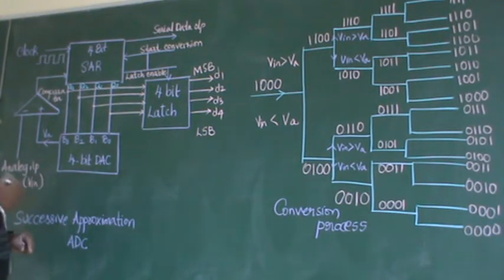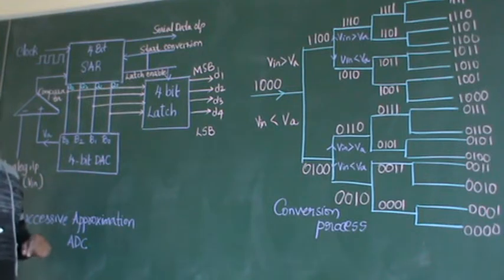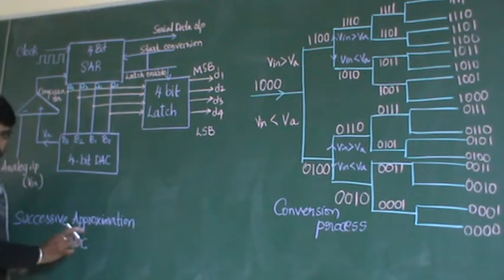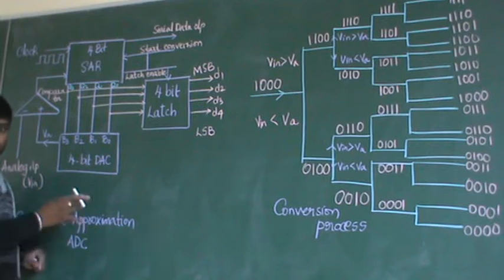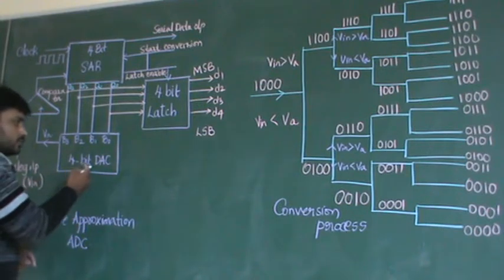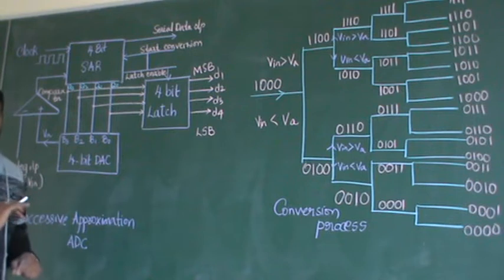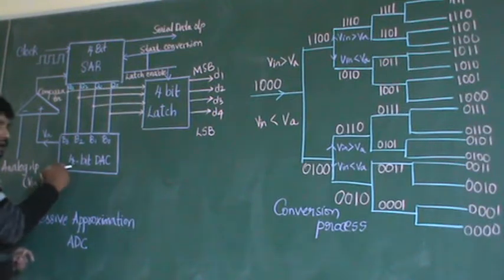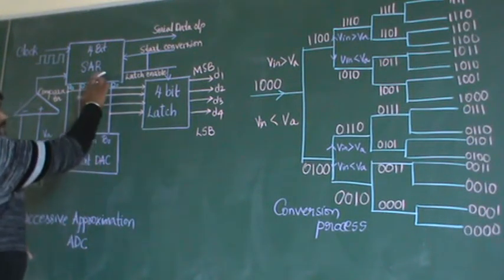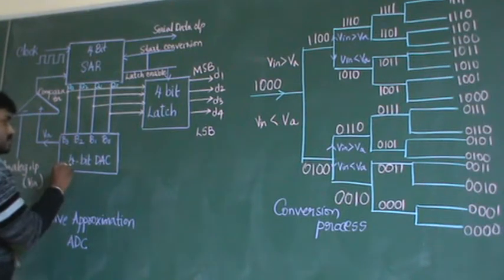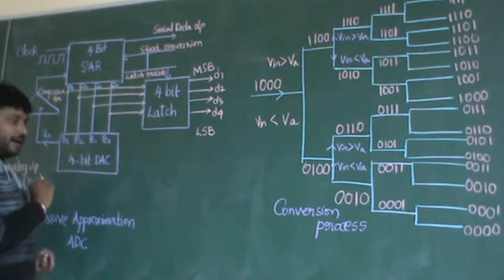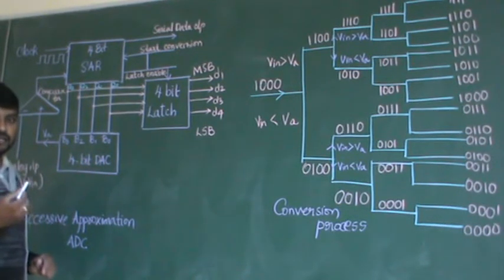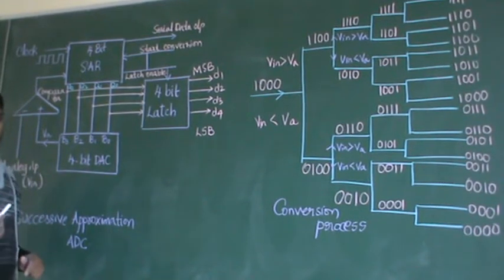The second block is the DAC — very, very important. Within the ADC you are using a DAC. You are constructing the analog to digital converter, and within it you are using a digital to analog converter. That is also a 4-bit DAC. This 4-bit DAC can be anything — either a binary weighted resistor DAC or an R2R ladder DAC.